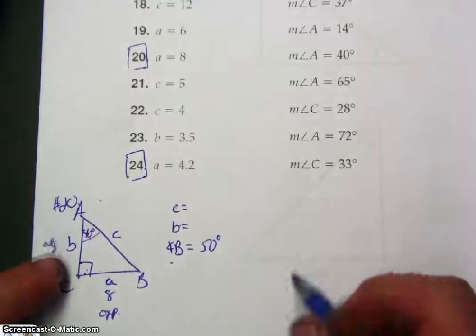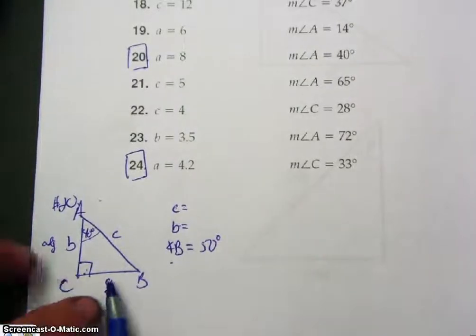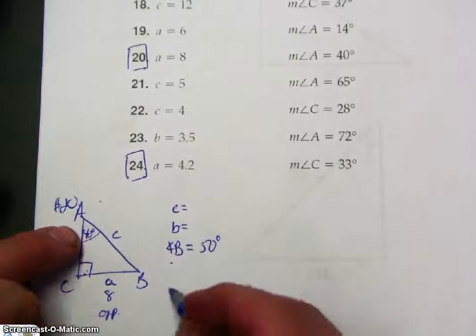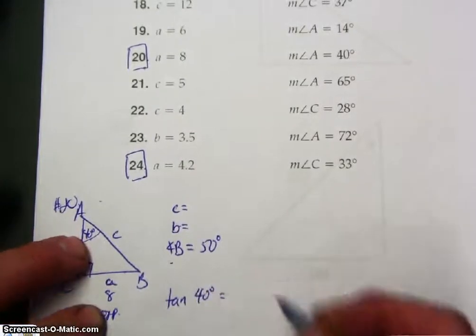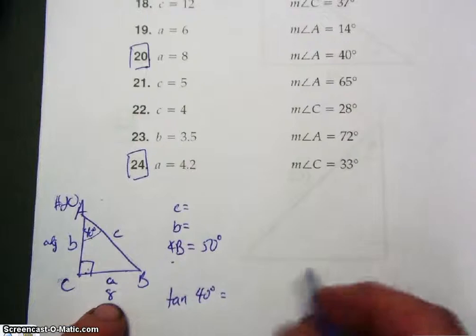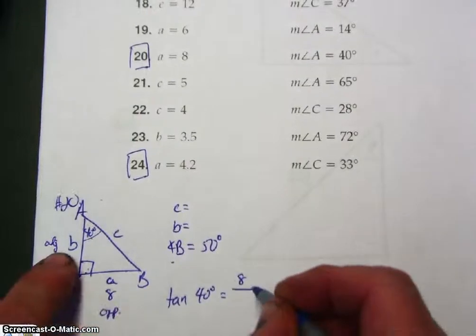Actually, let's see here. I want to use tangent of angle A, or 40 degrees, equals opposite over adjacent.